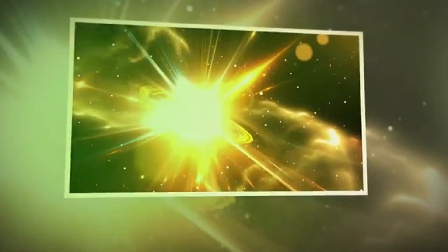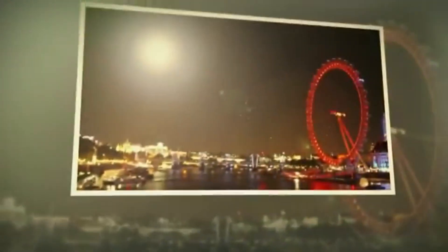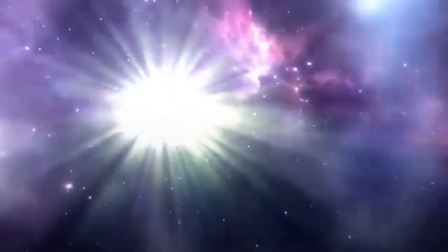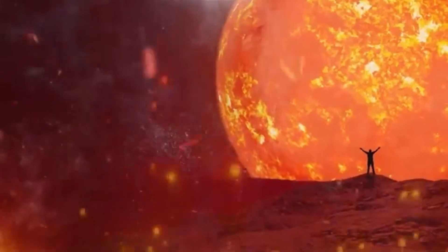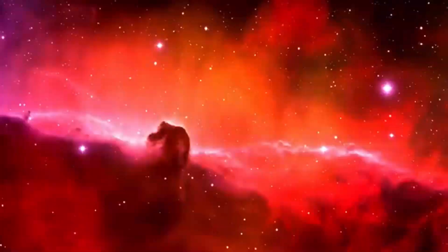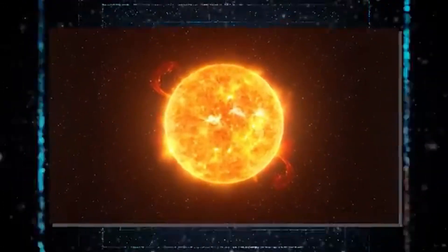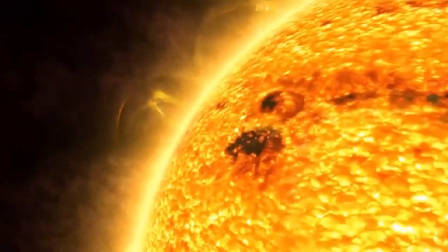As a red supergiant, Betelgeuse is in the twilight of its existence, a phase characterized by expansion and cooling following a life spent fusing hydrogen into helium in its core. But what about the age of Betelgeuse? This star, believed to be around 8 to 8.5 million years old, is relatively young in human terms, but ancient in the context of stellar lifetimes.